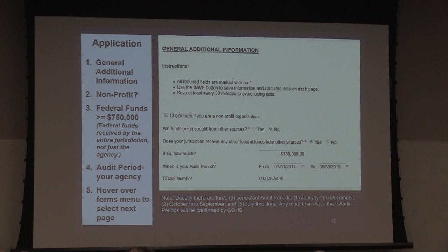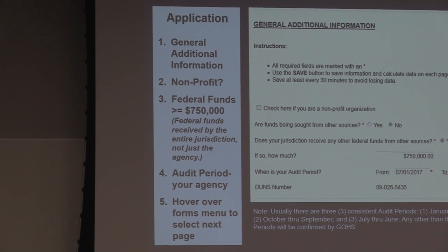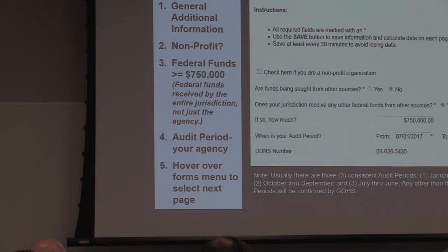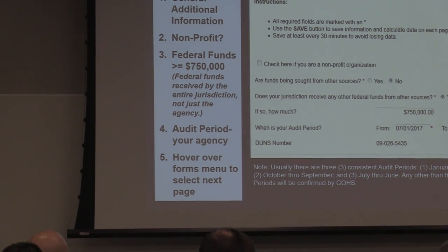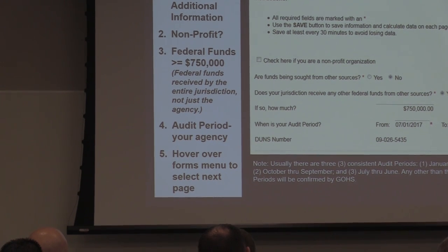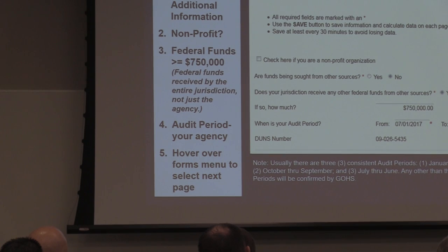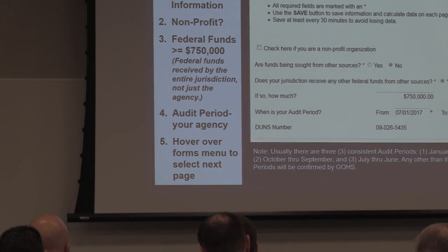If your entire county, city, or organization receives $750,000 or more in federal funds, there are additional steps that finance is going to need from you, so that's why we need to know that. Then your audit period — typical audit periods are January to December, October to September, or July 1st to June 30th. That's next year, so if you are January to December, it will be January 1, 2020 to December 31, 2020. Your DUNS number will also be needed in the application process.